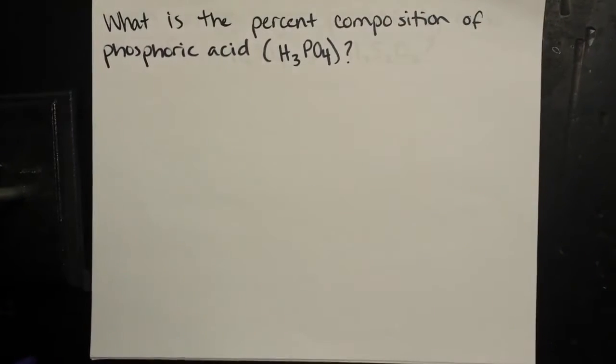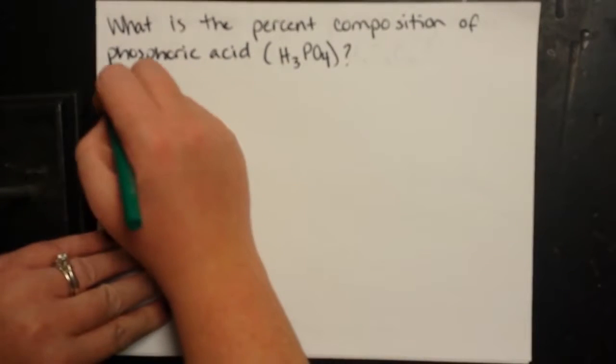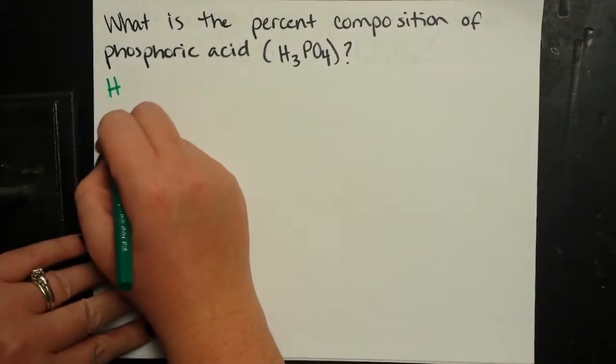Here we're going to look for the percent composition of phosphoric acid. The first step, just like last time, is going to be to find the molar mass of the compound. So I'm going to take my elements: hydrogen, phosphorus, and oxygen.